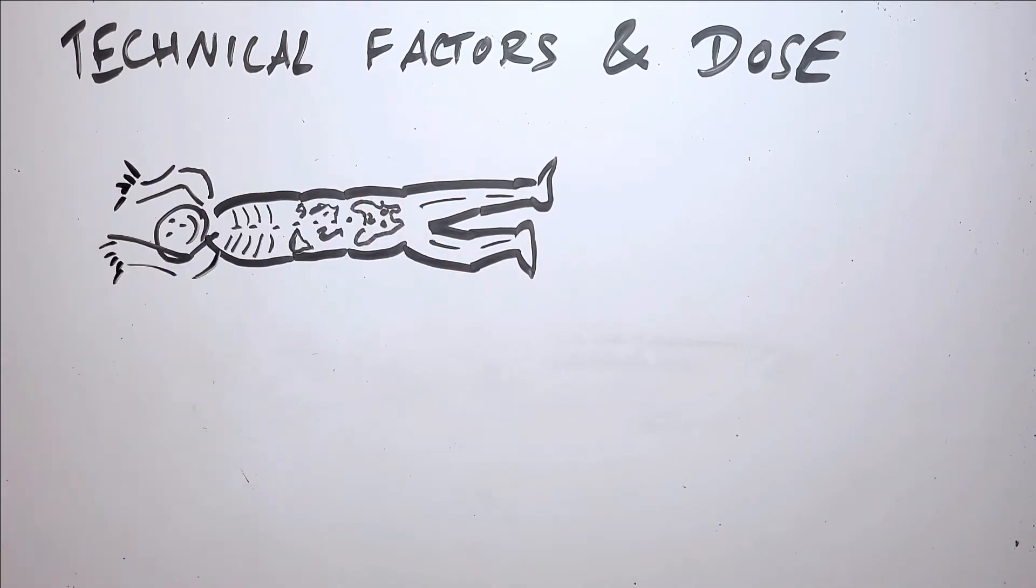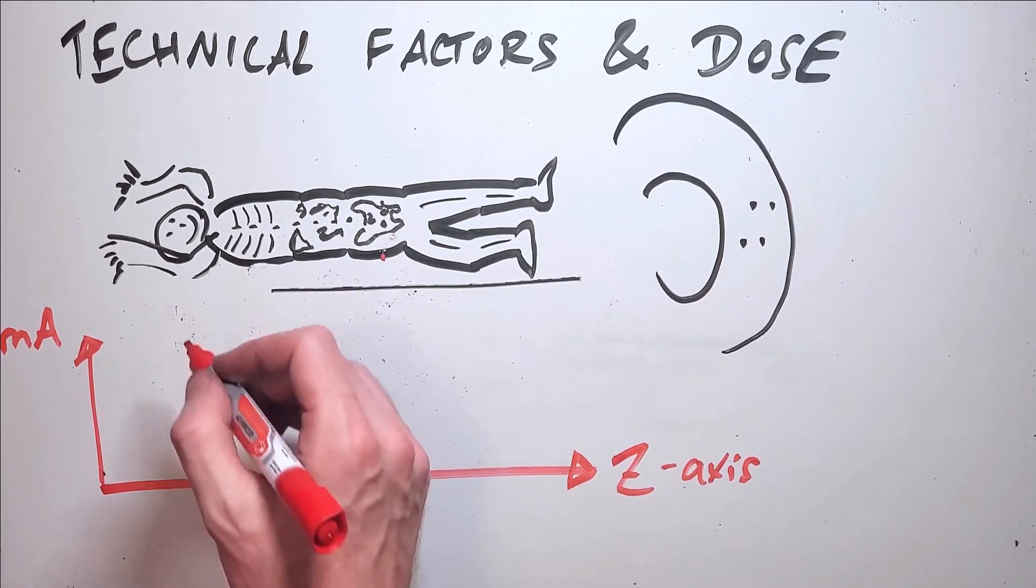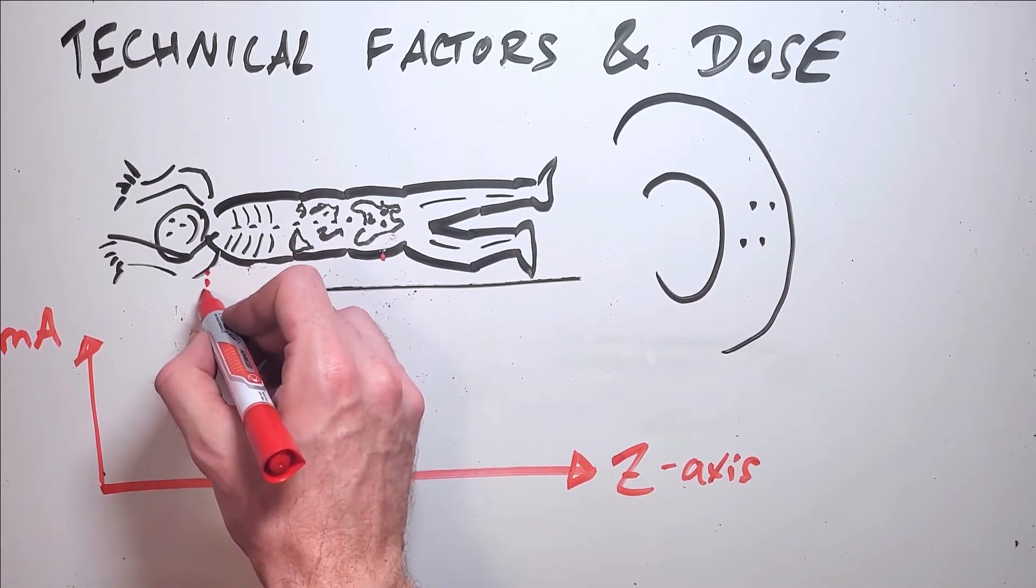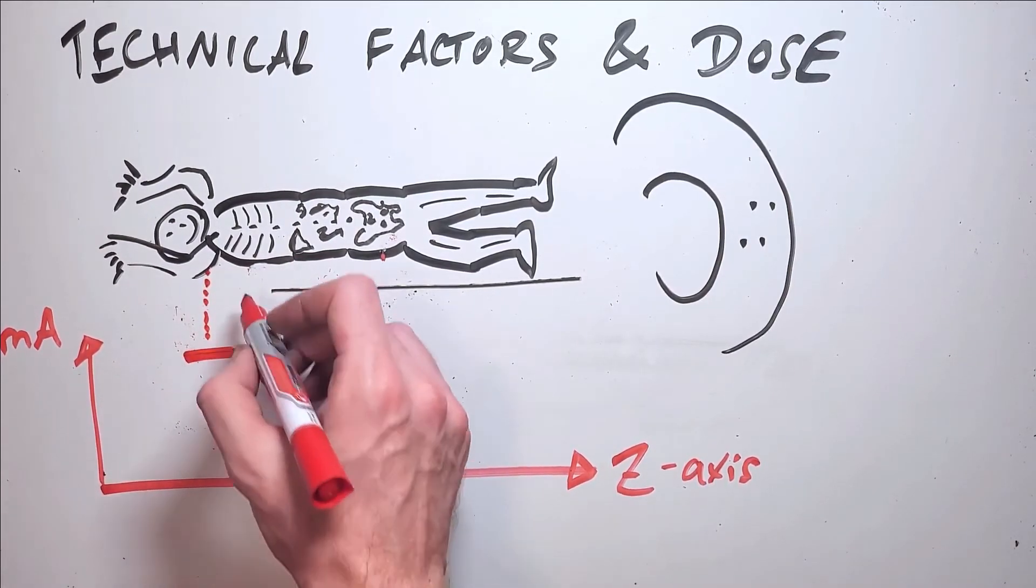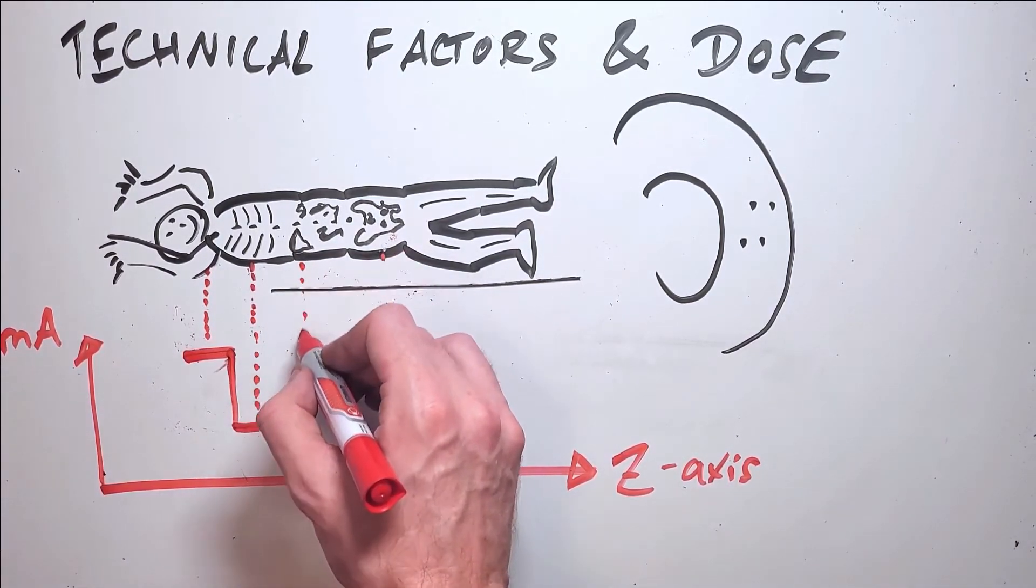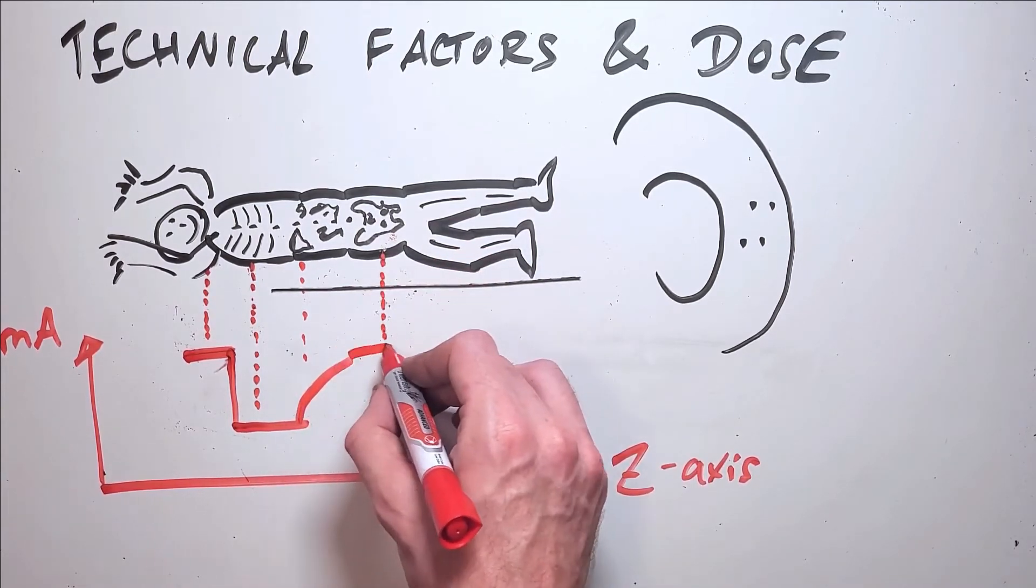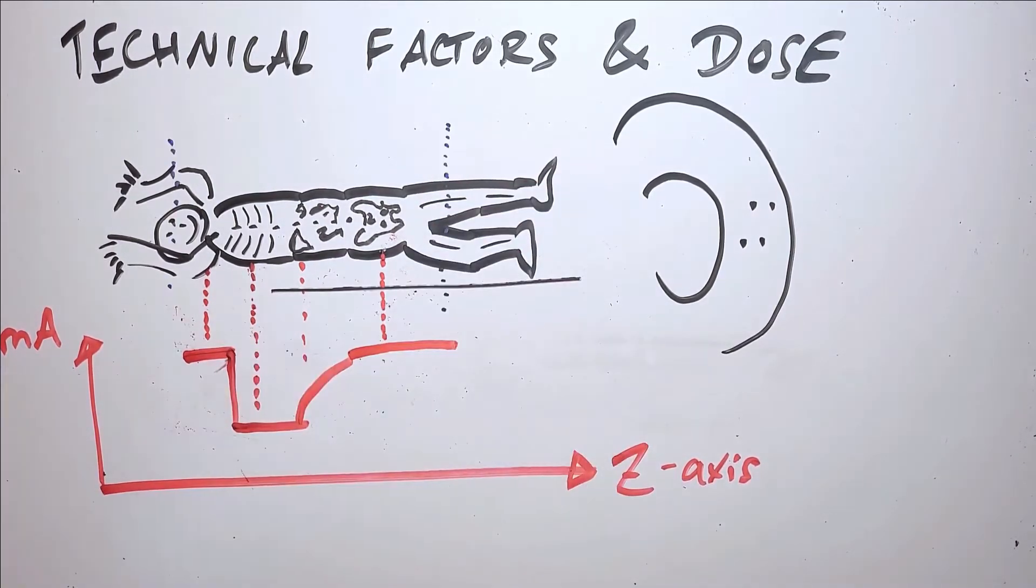For example, on a chest-abdomen-pelvis scan, the mA will be higher through the upper chest to penetrate through the shoulders on both sides of the chest. Then it will drop down through the thorax because it's mostly passing through air and lung tissue. Then it will increase again when it gets to the abdomen and then further as it gets through to the pelvis.